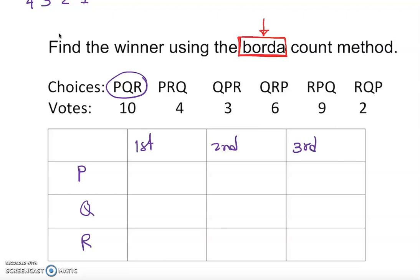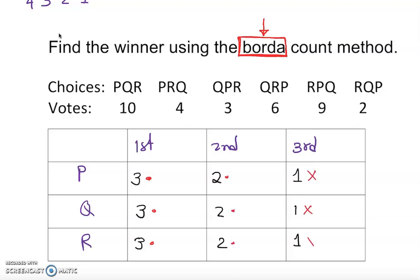Since I have three candidates, third place gets one point, second place gets two points, and first place gets three points — so we fill out three, two, one for each candidate. Depending on the number of candidates, if it is four you start with four, three, two, one. Now this is the big part — you have to pay attention here. We are going to see how many votes each candidate got, then multiply. This is a multiplication step.